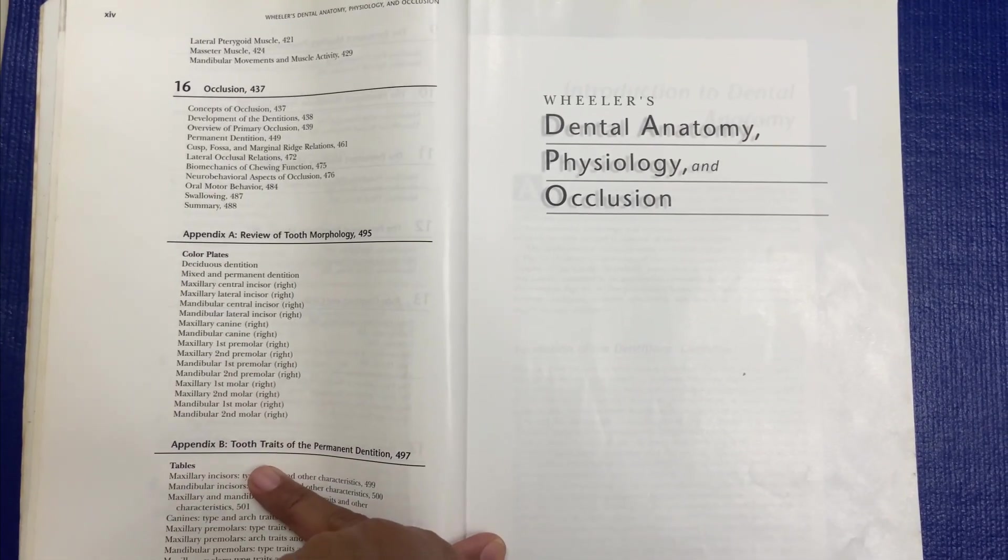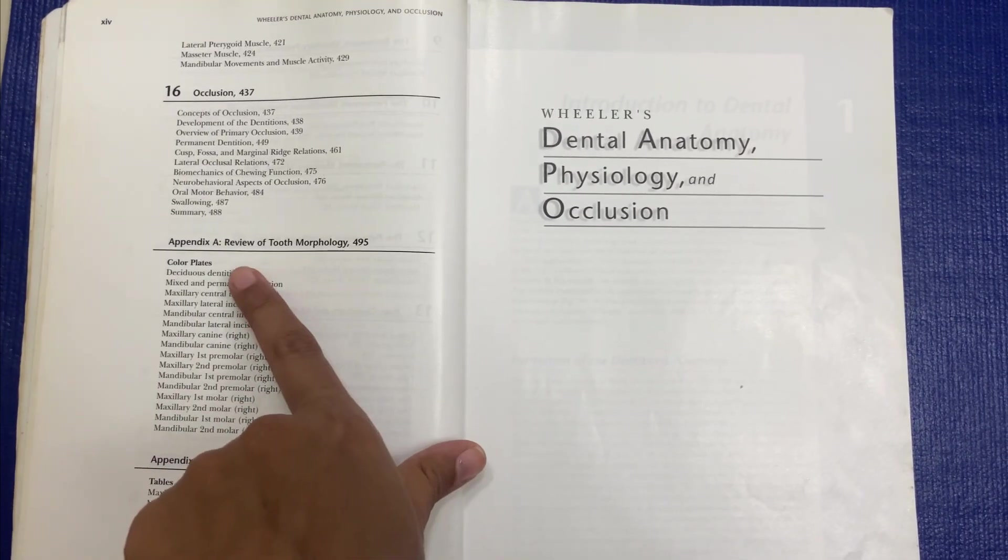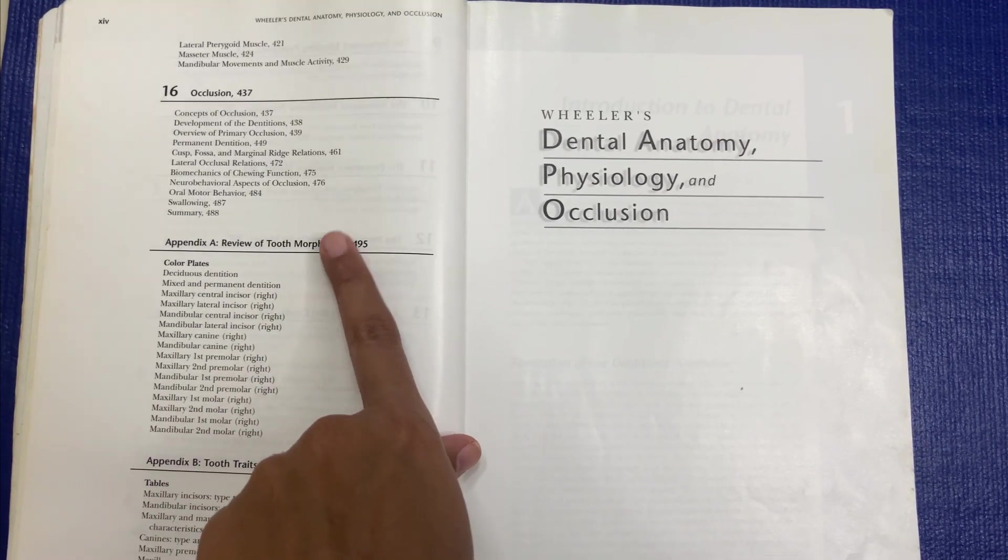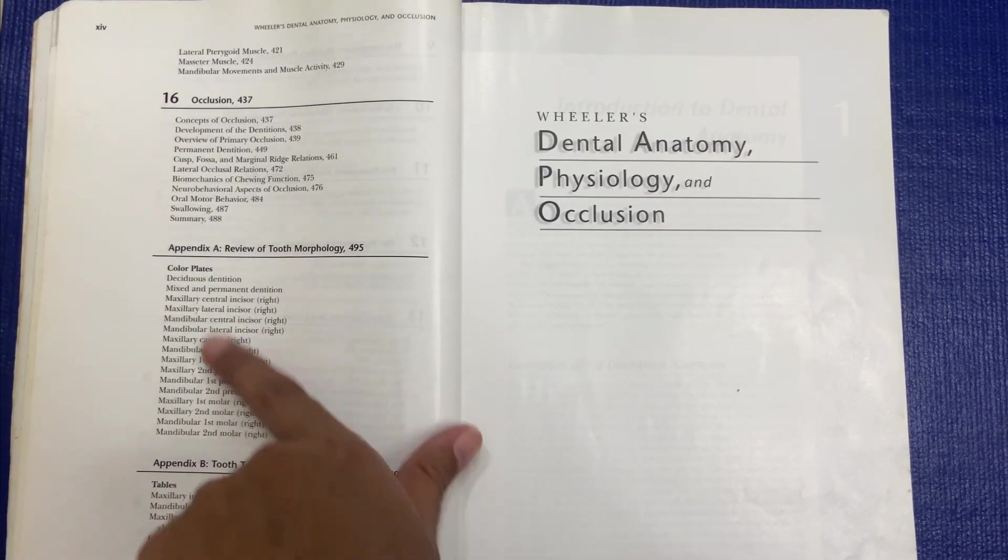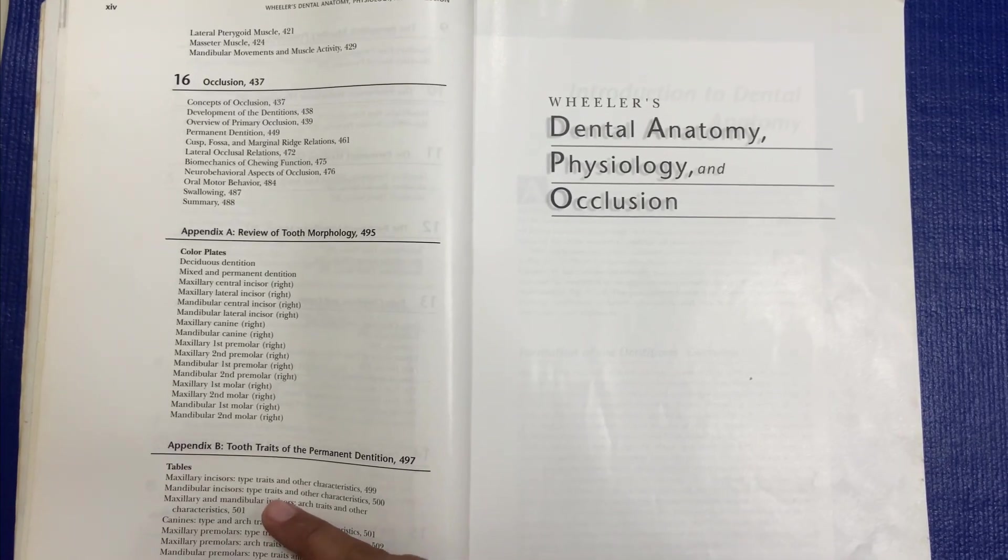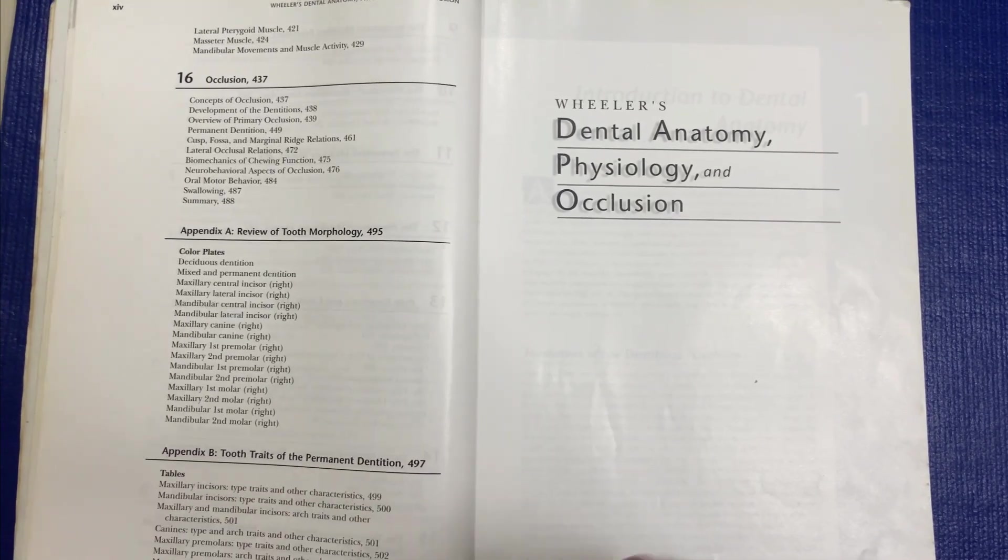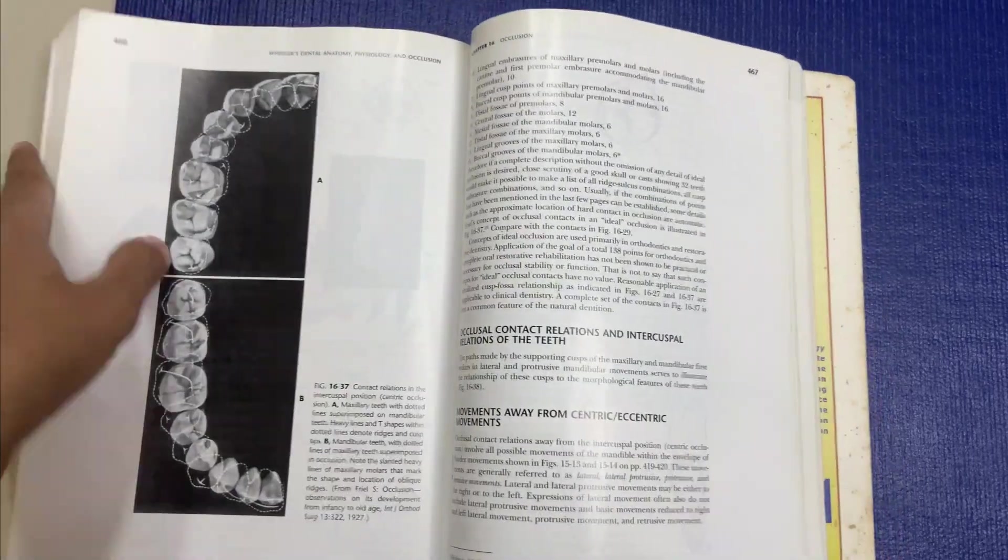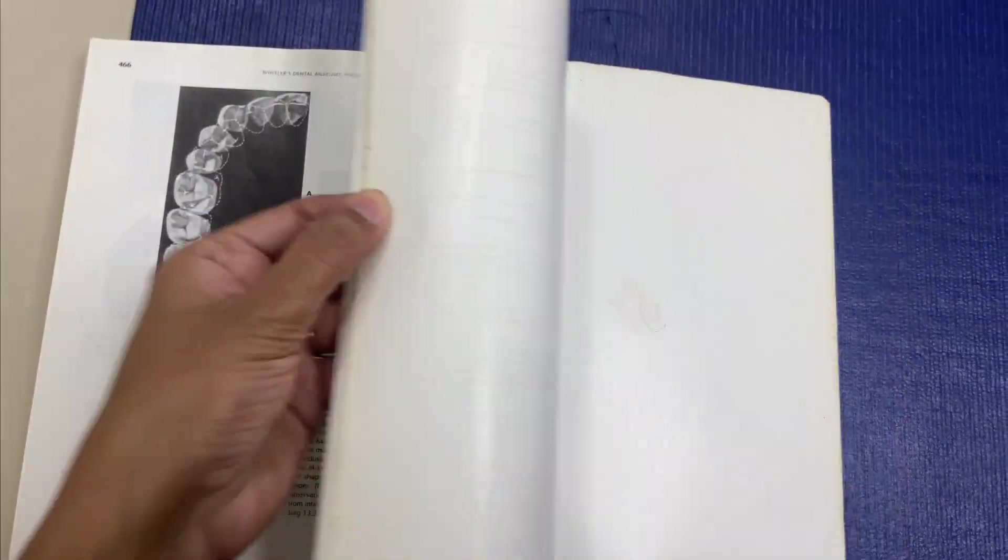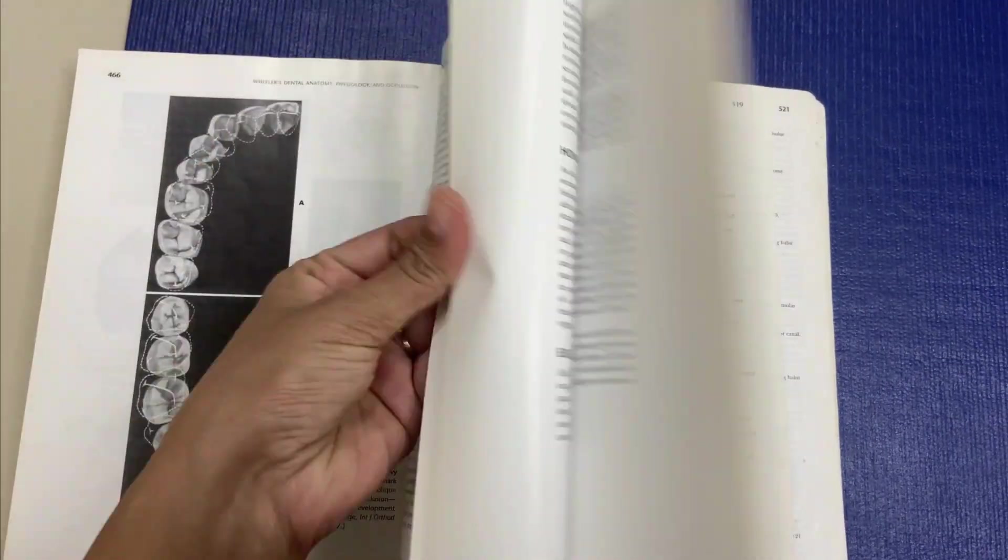Then there are two appendices, appendix A and appendix B. In appendix A there is a review of tooth morphology with review of color plates for all the teeth. In appendix B there are tooth traits of the permanent dentition. So it's a very good book, you'll get it in a colored one.